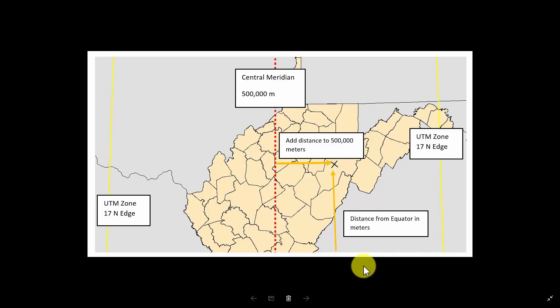Our example will assume the units are meters. In the northern hemisphere, the equator is assigned a value of zero, and you add as you move north.